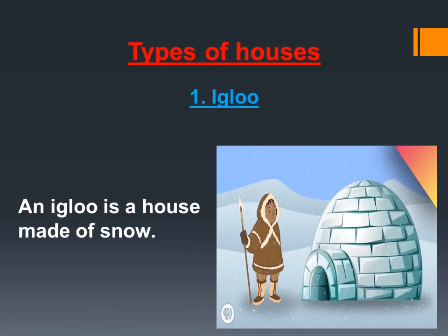Next, different types of houses. The first is an igloo. An igloo is a type of house made of snow — with the help of snow they build a house, which is called an igloo.